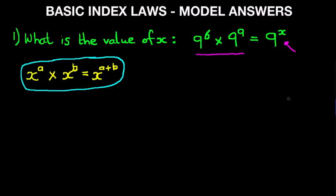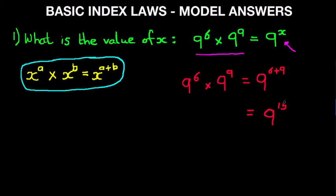So let's work through this. We have 9 to the power of 6 times 9 to the power of 9. This becomes 9 to the power of 6 plus 9, which is 9 to the power of 15. Therefore x equals 15. And that is the answer — typically this question would be a one mark question.